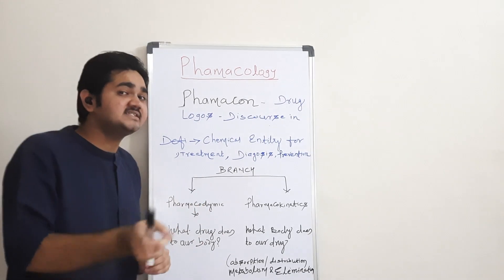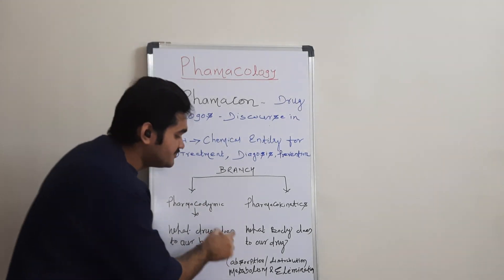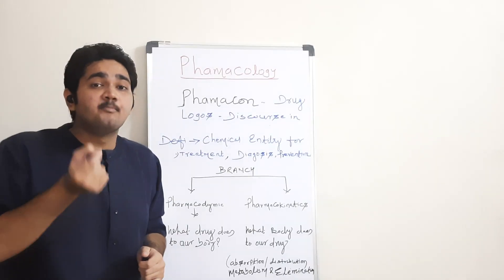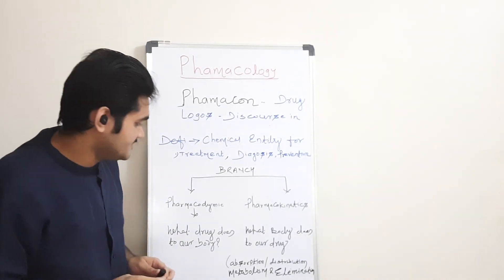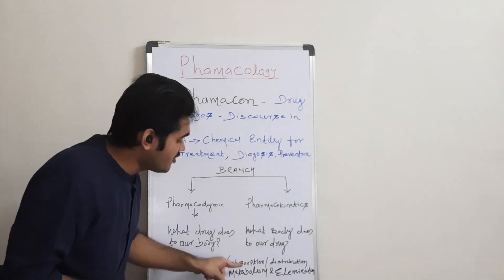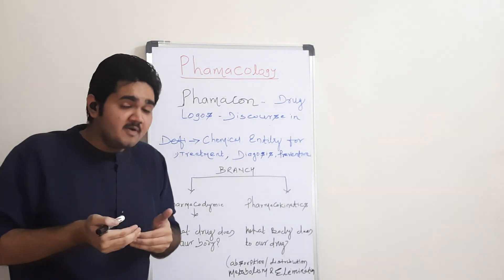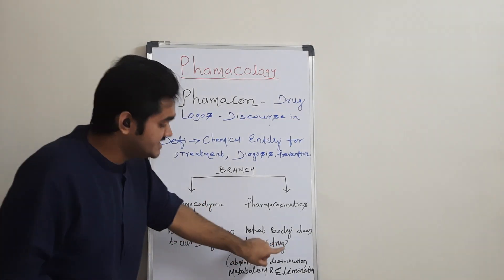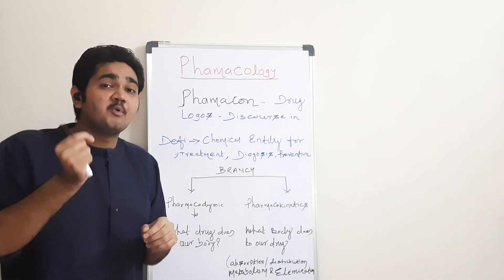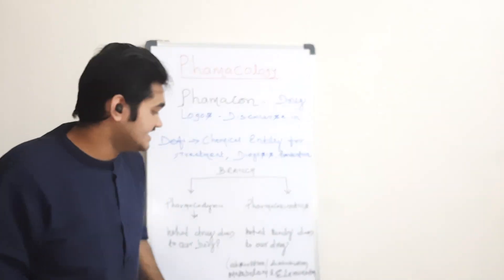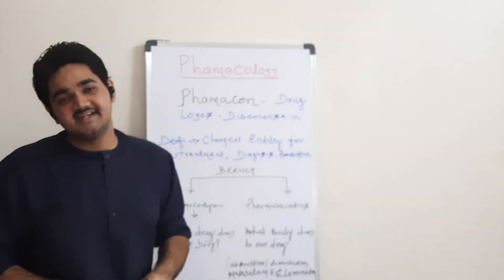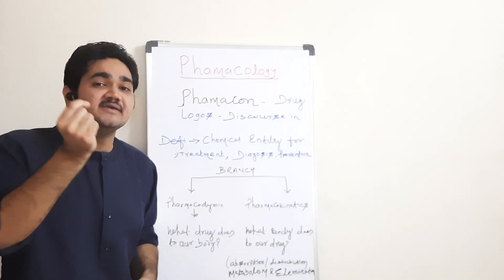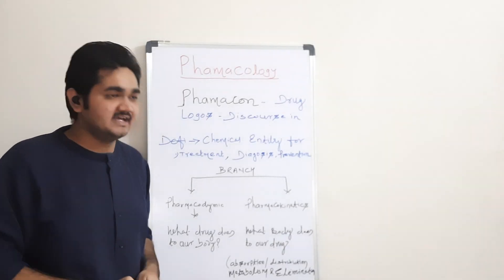The point to understand here is that the absorption was done by my body to the drug. Similarly, the metabolism was done by my liver. Similarly, distribution was done by my body's blood, and of course, elimination was done by my body's eliminating organs.